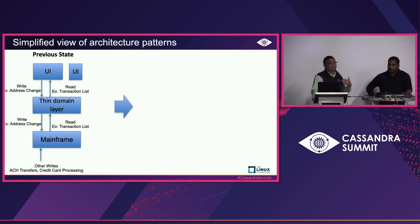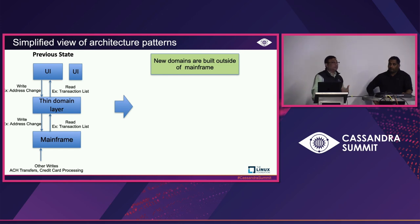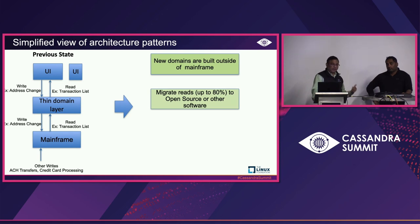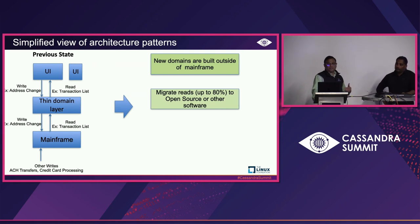When moving away from mainframes, we have several strategies. One is to stop building new domains in the mainframe. The second — and probably the key part — is addressing the read workload. In financial services, you don't do transactions every day; you mostly look at transactions. Our read-to-write ratio is around 80% reads and 20% writes. So this conversation is about how we migrated the reads away from the mainframe, which forms the most significant chunk of traffic.